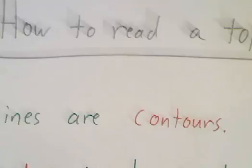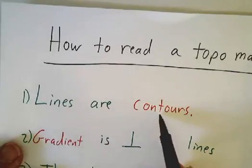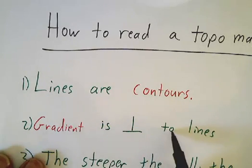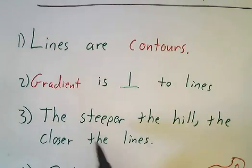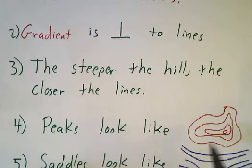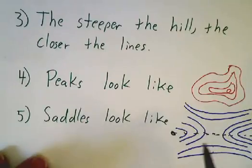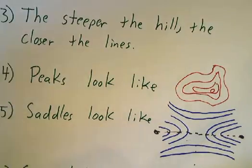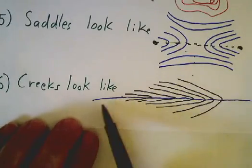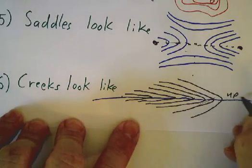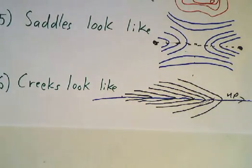So the basic principles of how to read a topo map: the lines are contours. The gradient is always perpendicular to the level sets — the contours are level sets, the gradient is perpendicular, and it points uphill. The closer the lines are, the steeper the hill. If you have a bunch of lines really closely packed together, you're at the edge of a cliff. If you have a mountain peak, the contour lines tend to look like concentric circles. If you have a saddle, the contour lines tend to look like a hyperbolic shape. Whenever you have a creek, the contour lines tend to form a V-shape and always point upstream. And that's how to read a topo map using calculus.